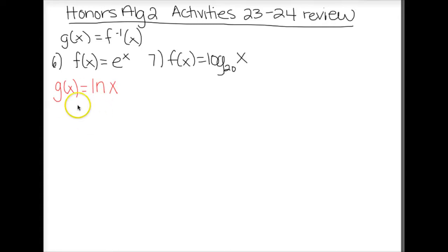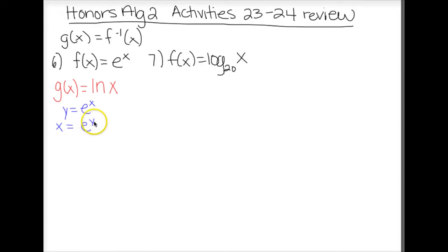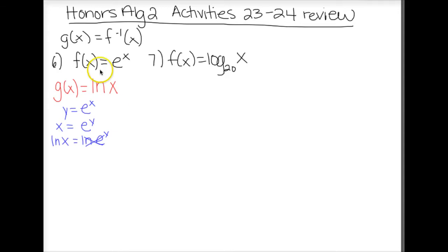If you really want to show the work, the original is saying y equals e to the x. When we find inverses, we switch x and y, which gives us x equals e to the y. Then to get y alone, we take the natural log of both sides — natural log of x equals natural log of e to the y. These cancel, y is alone, and we put back our notation. There is a reason why this is the answer, but I'm fine with you just writing the answer if you know it.